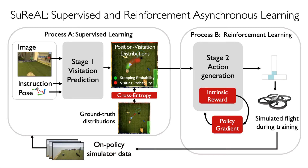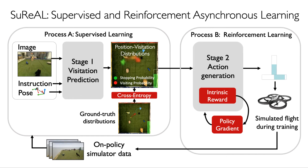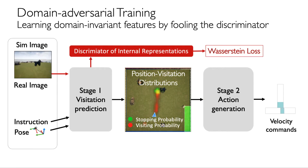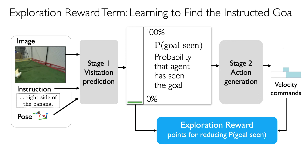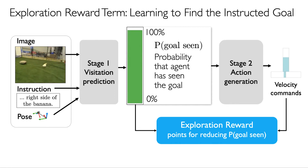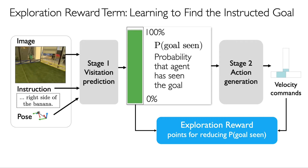In essence, we use supervised learning to learn all vision and language reasoning, achieving much better sample complexity than using end-to-end RL, but at the same time SURREAL learns from on-policy experience for robust controller dynamics. We use a domain adversarial training objective to learn domain-invariant internal representations, such that the same model can be used in both simulation and the real world. To address partial observability, the agent explores the environment as directed by language. Stage 1 predicts the probability that the goal is seen, and Stage 2 uses this signal to inform its exploration behavior.